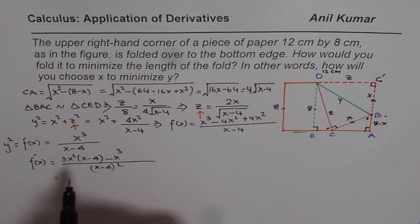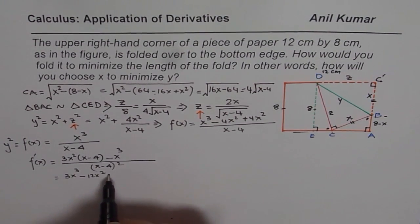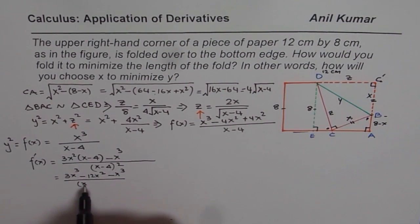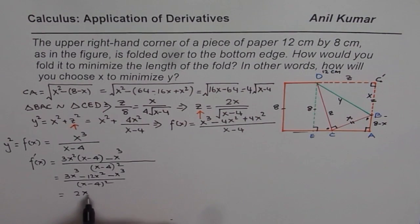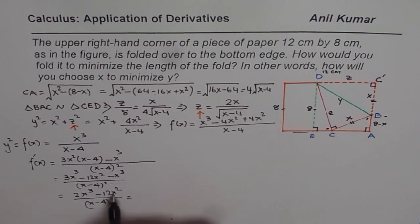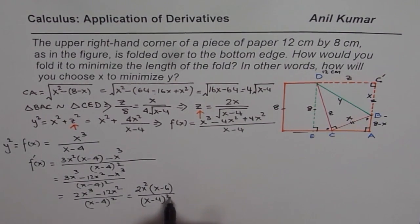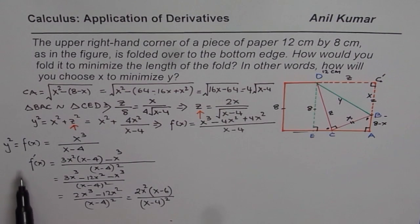So we have 3X cubed minus 12X squared minus X cubed over (X minus 4) squared. And 3X cubed minus X cubed is 2X cubed, giving us 2X cubed minus 12X squared over (X minus 4) squared. We can take 2X squared as a common factor, and we get F'(X) equals 2X squared times (X minus 6) divided by (X minus 4) squared. That is our first derivative of Y squared.